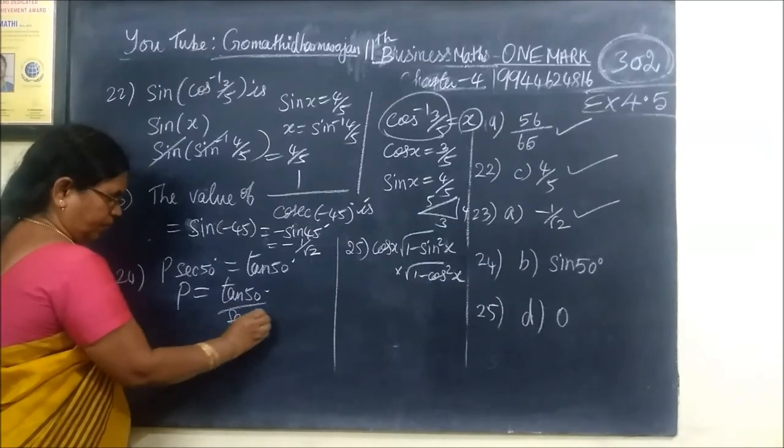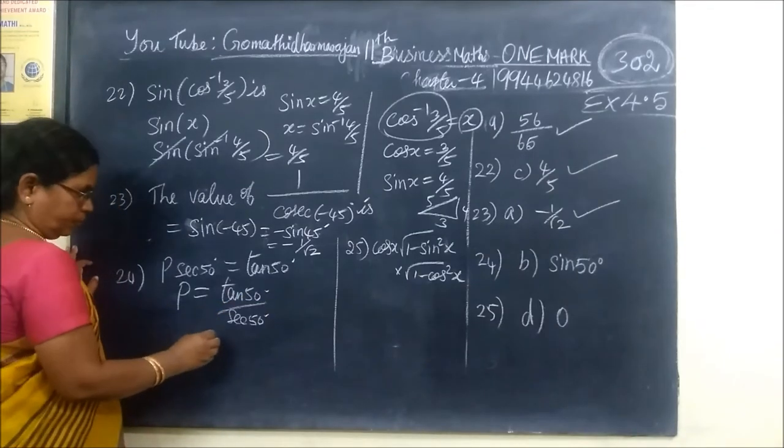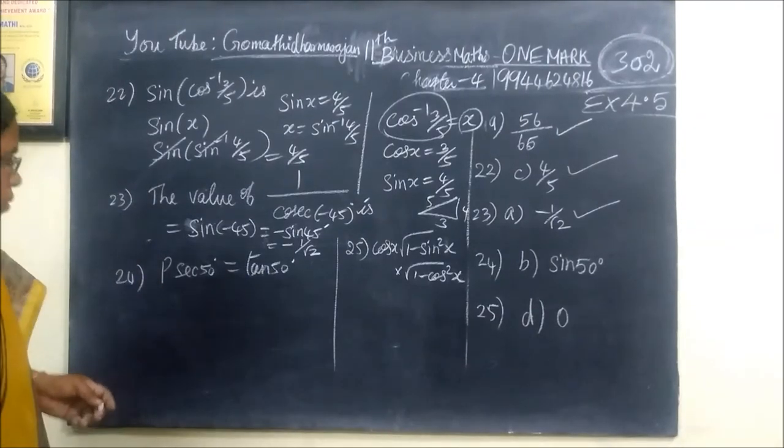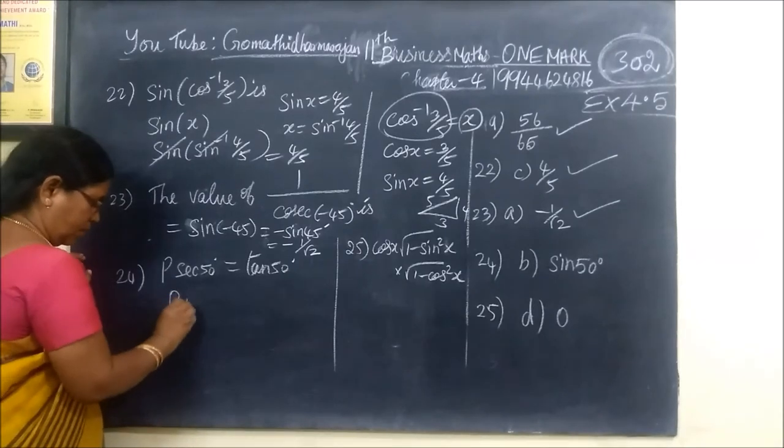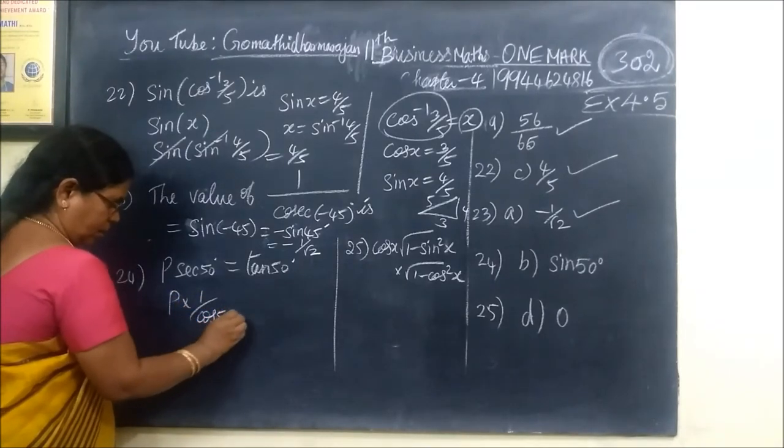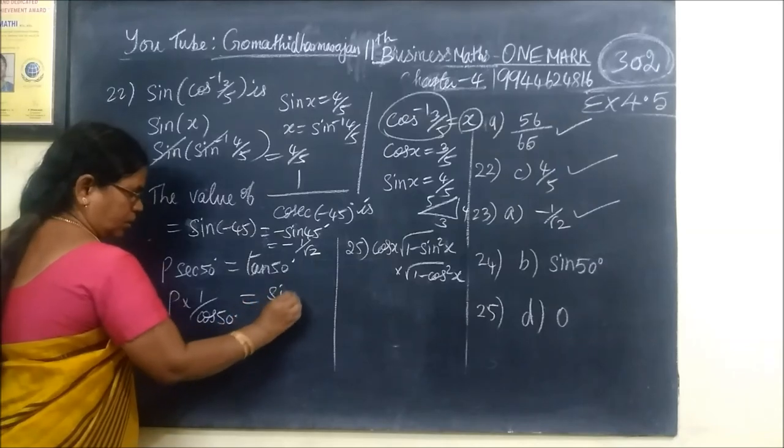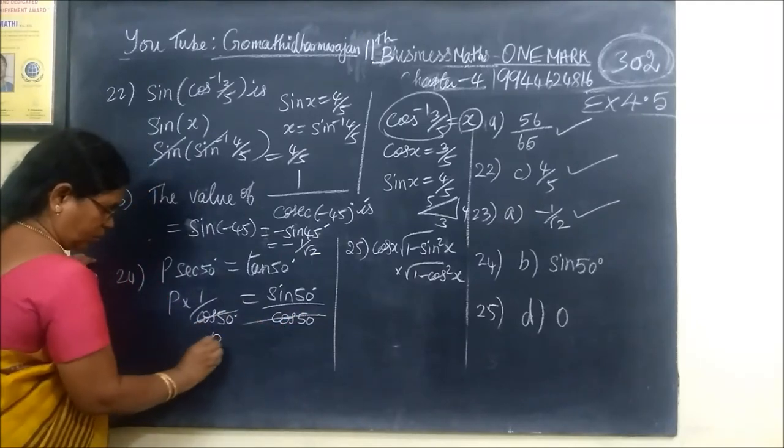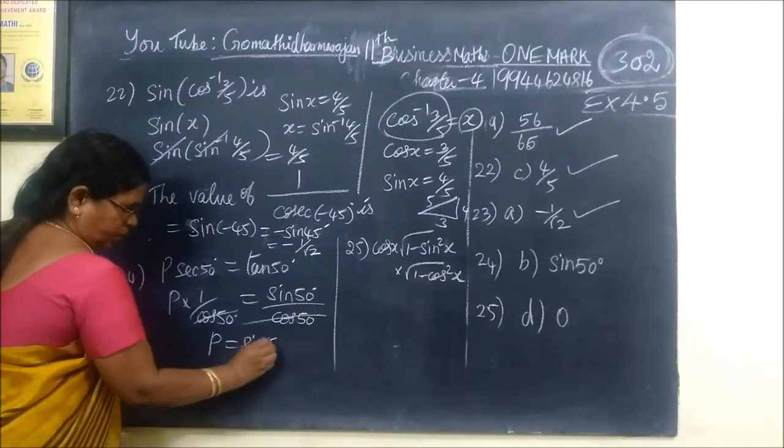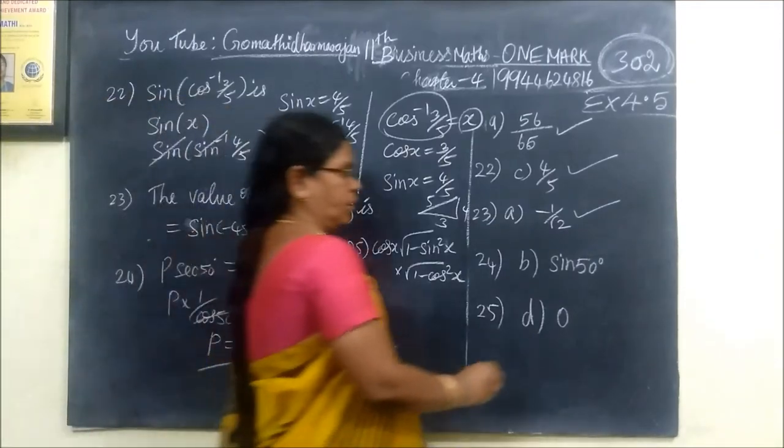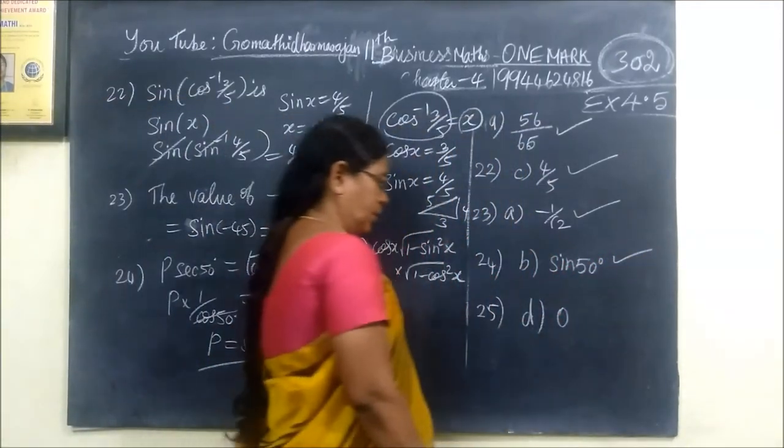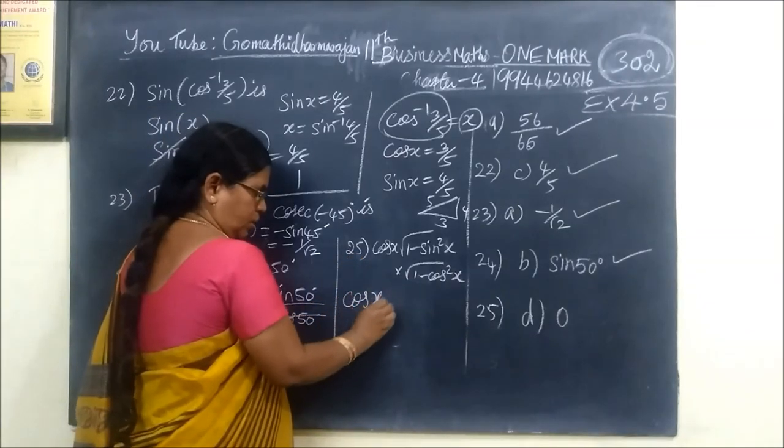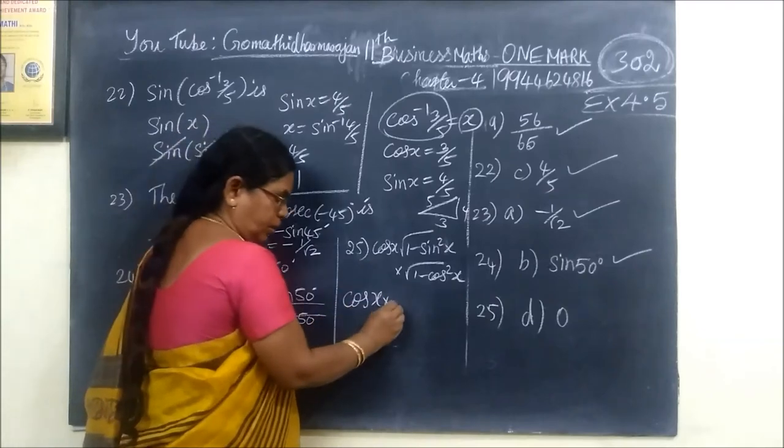Tan 50 by secant 50, this is how we can do it. Sin by cos, 1 by cos. Then tan equal to sin by cos. Then so equal to sin 50 degree.